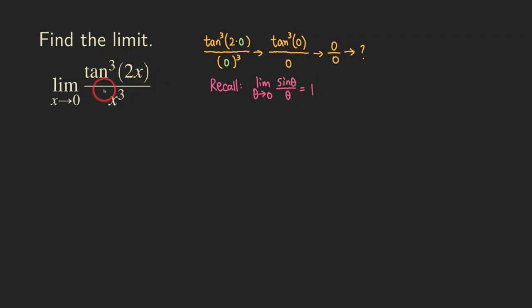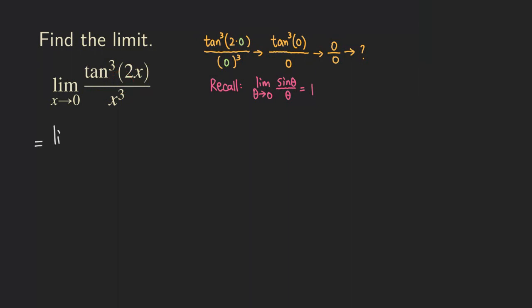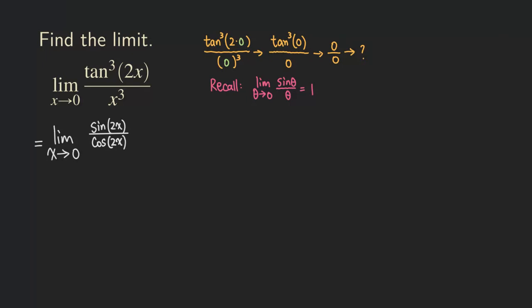We can actually rewrite the tangent so that it's involving sine and cosine, so we don't need to worry about the tangent anymore. So we write tangent as sine over cosine, giving us sine of 2x over cosine of 2x, and then remember there was also a cube on the outside. So we are getting that quantity cubed, and then we still have the denominator which is just x cubed.